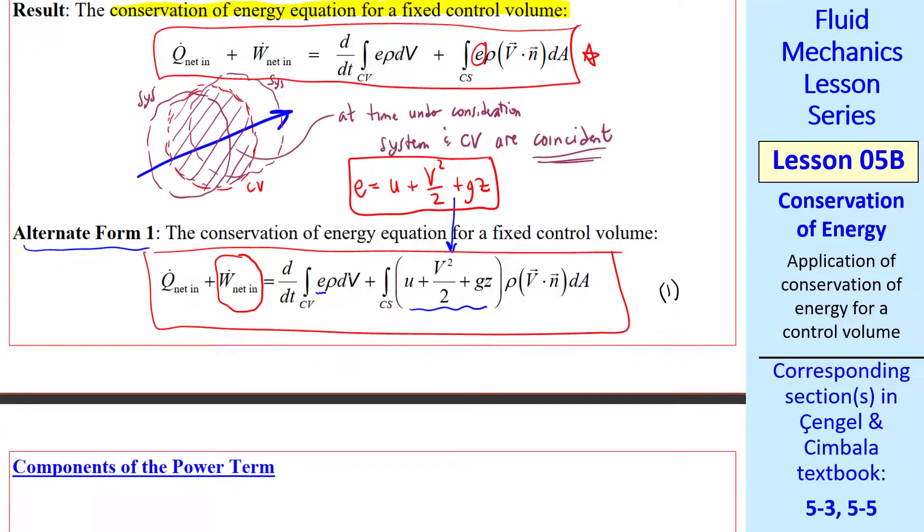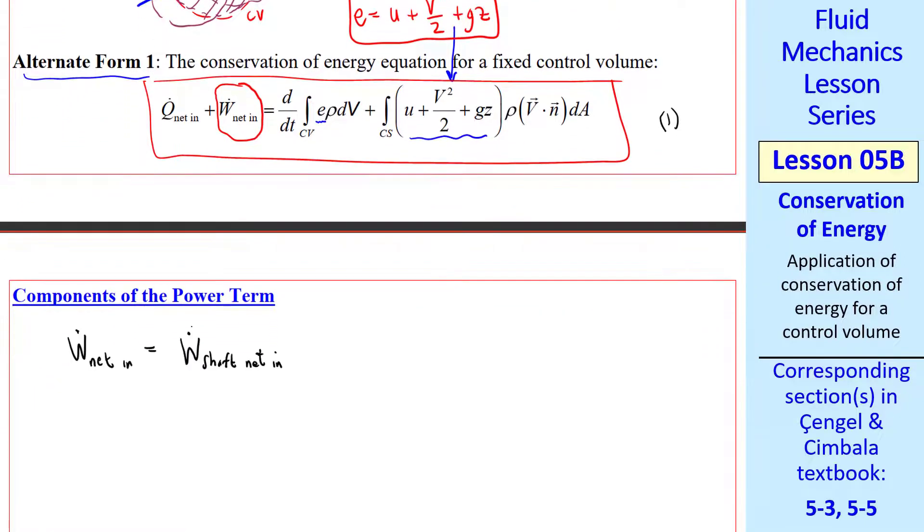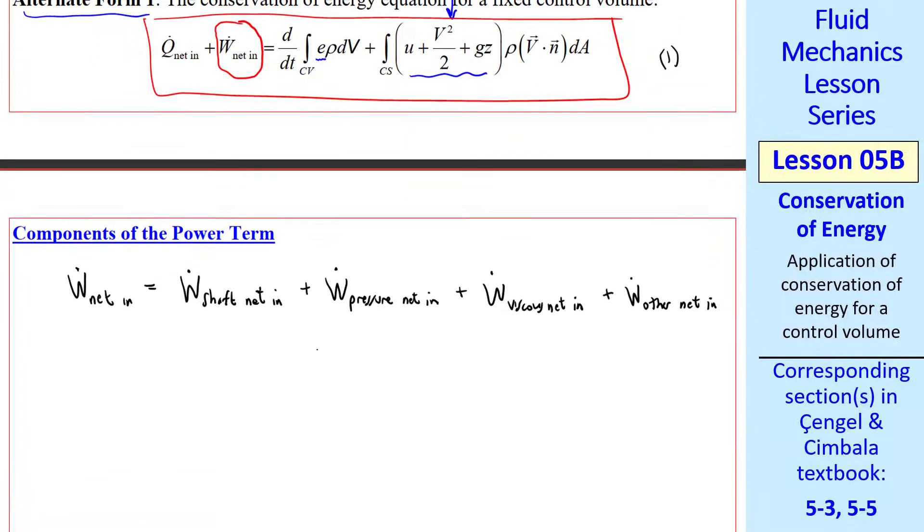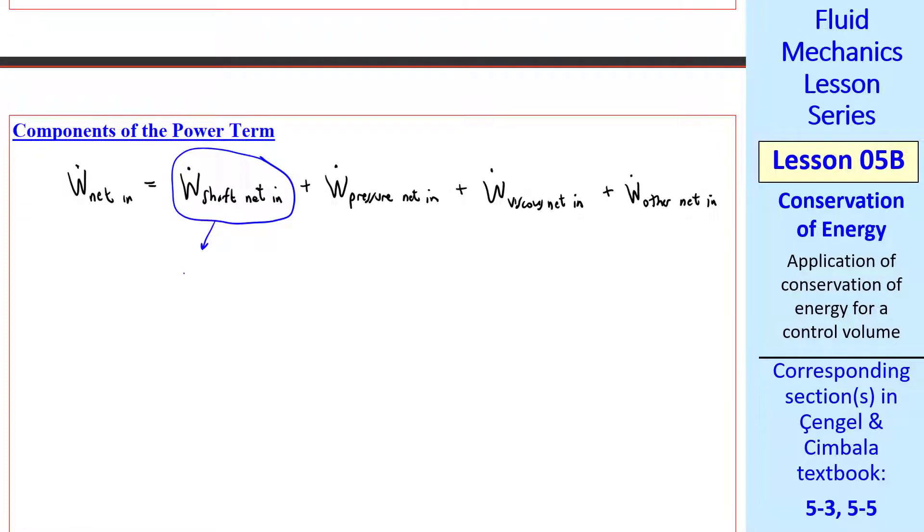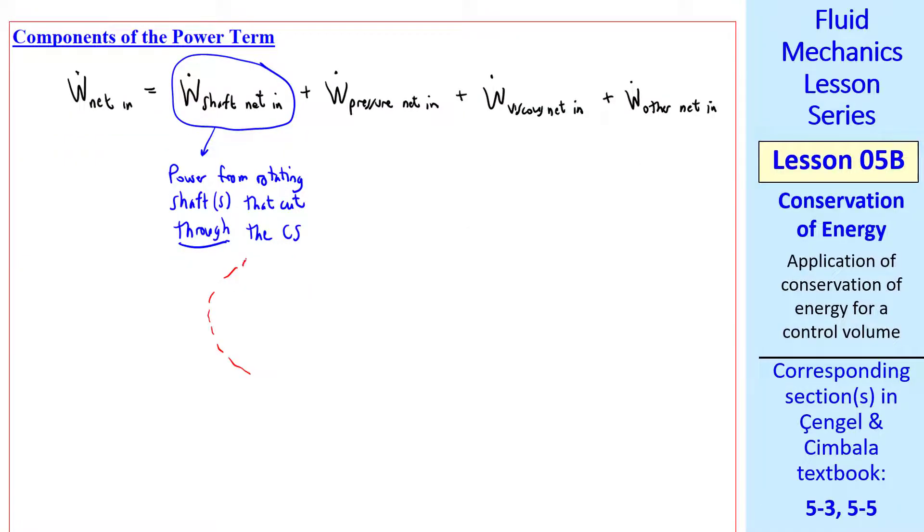I'll call this equation 1. We'll come back to this equation, but first let's look at this term, the net power term. We'll split it into four components: Ẇ_shaft_net_in plus Ẇ_pressure_net_in plus Ẇ_viscous_net_in plus Ẇ_other_net_in. This shaft power is power from a rotating shaft, or shafts, that cut through the control surface. Ẇ_shaft equals ω times T.